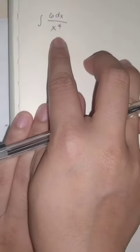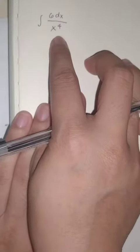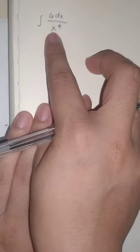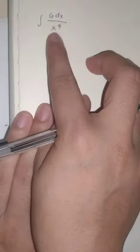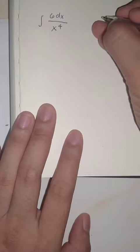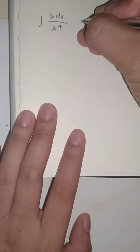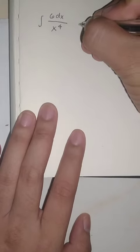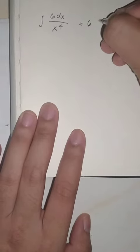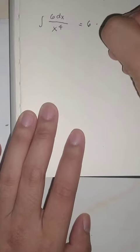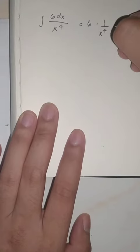How about if we have this sum? Basically, what I do is I use the exponential rule, wherein we can write this as 6 multiplied by 1 over x raised to 4 dx.